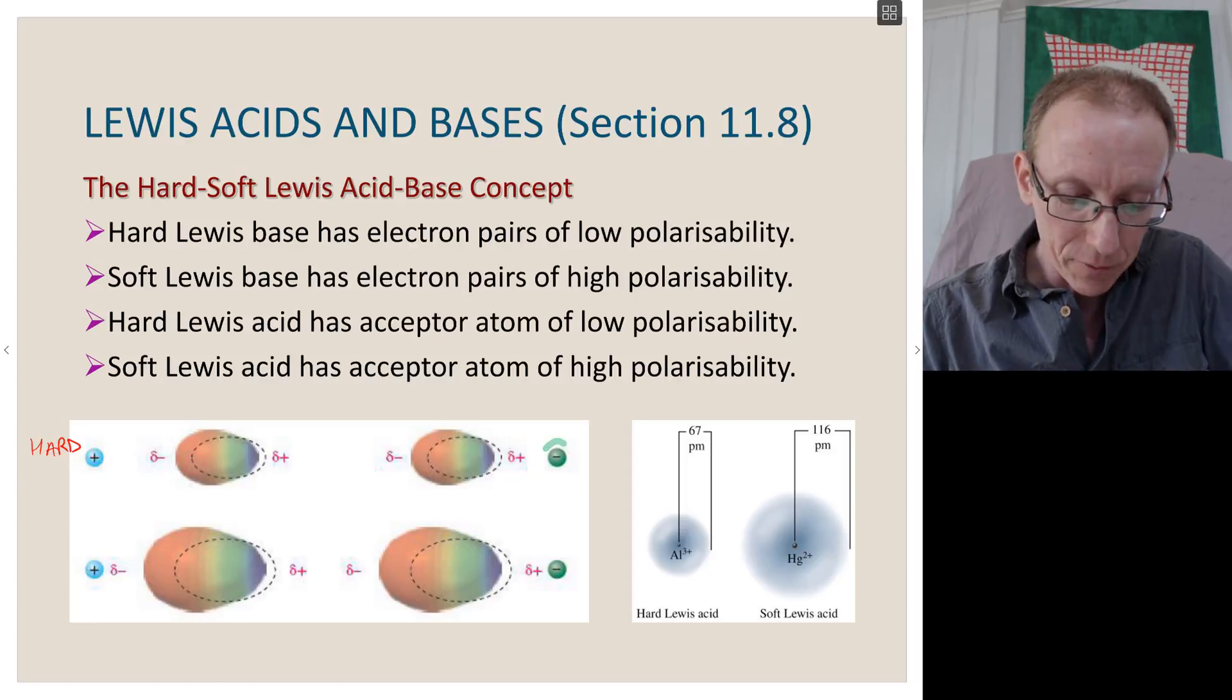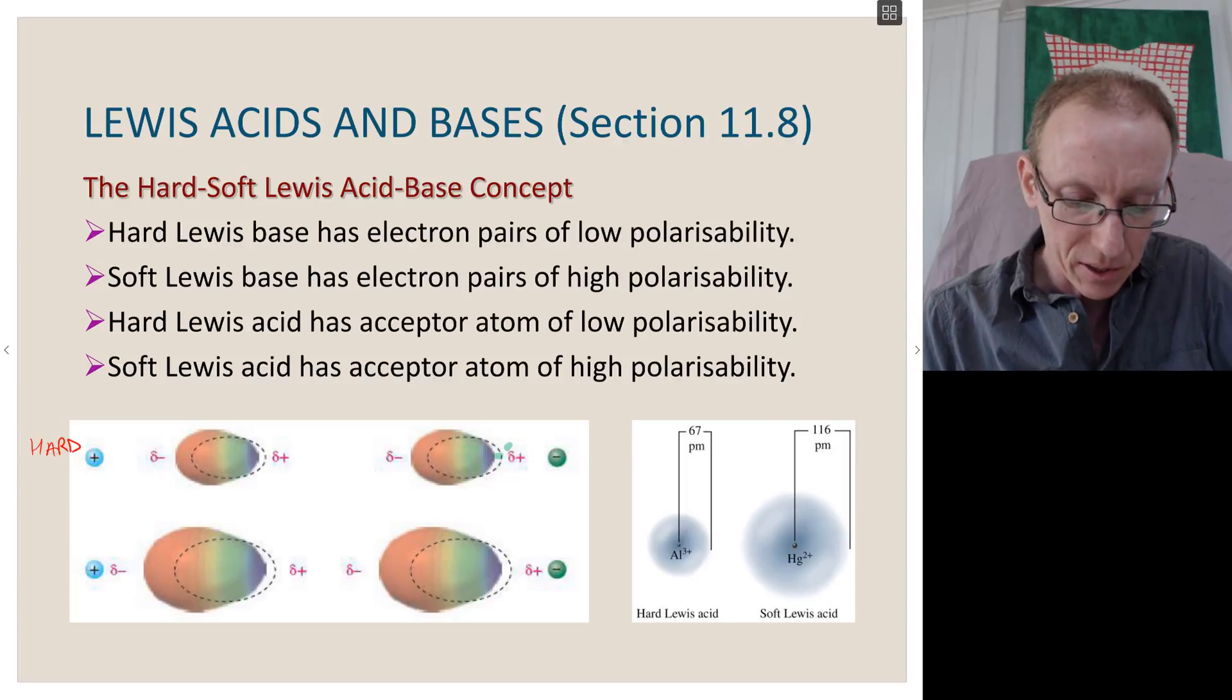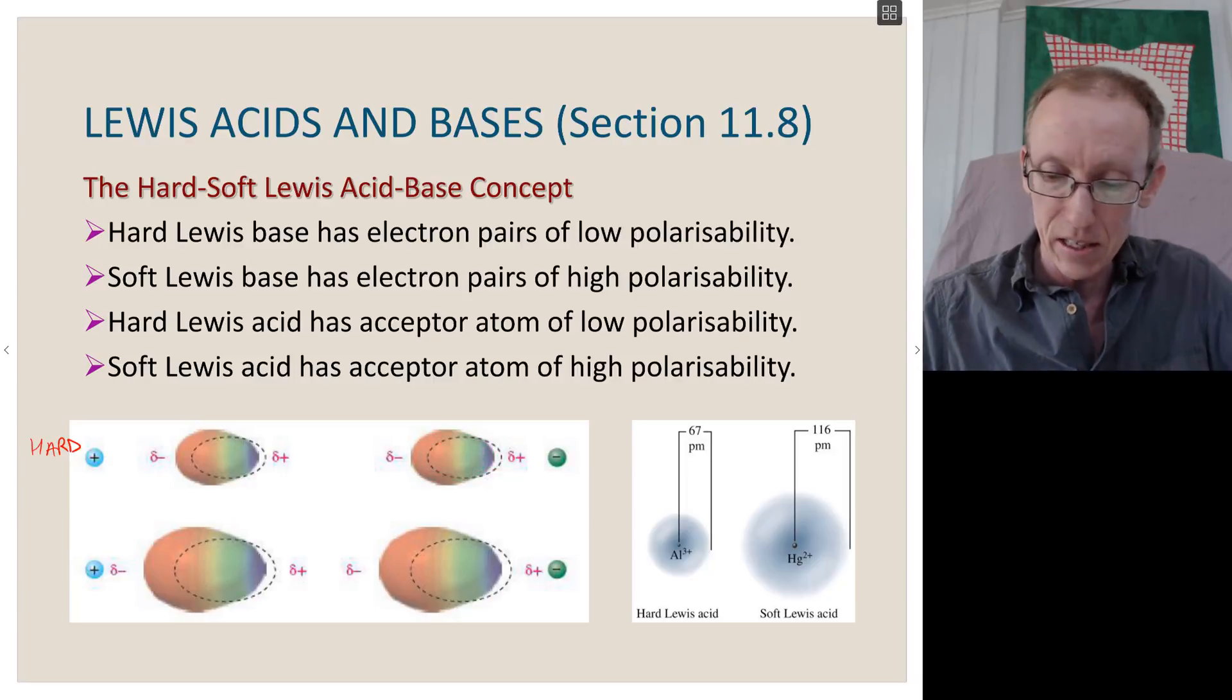Likewise, if we have a negative charge, we will repel the electron cloud around an atom away from that negative charge. And so this electron cloud has been polarized, but not to a great extent in a hard species.